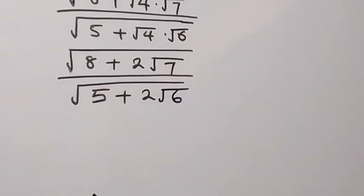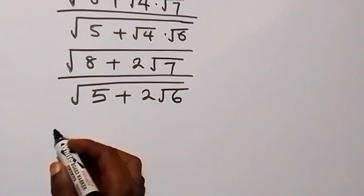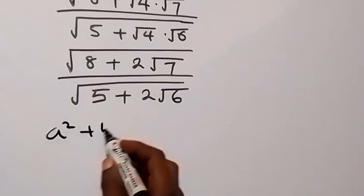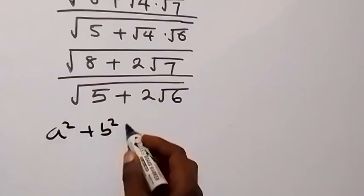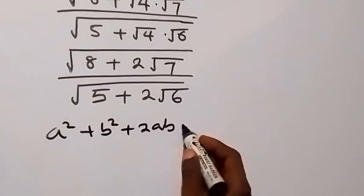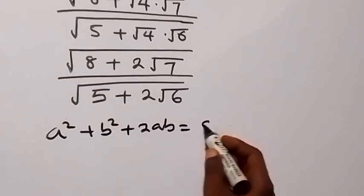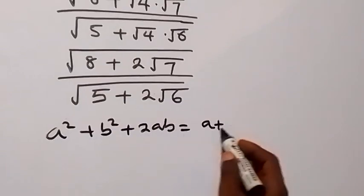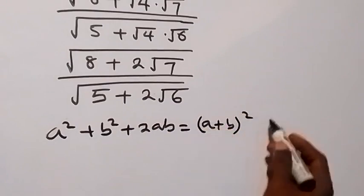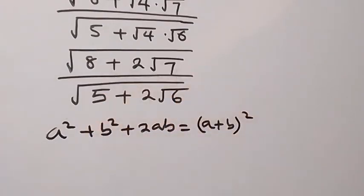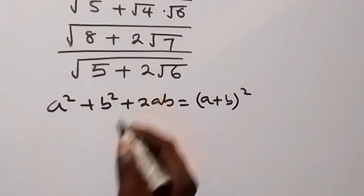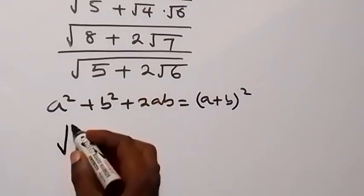From here we can express each of these in the form a squared plus b squared plus 2ab, which equals a plus b all squared. So when we express this in that format, from the numerator we can write that as a perfect square.